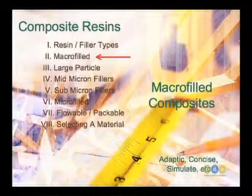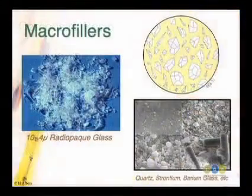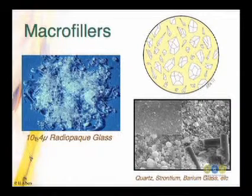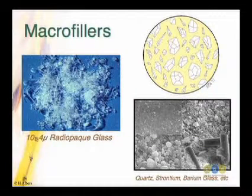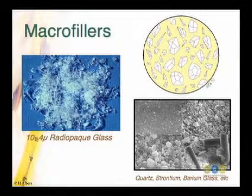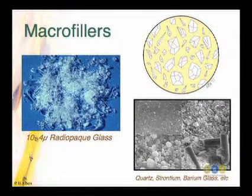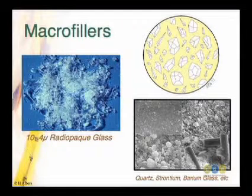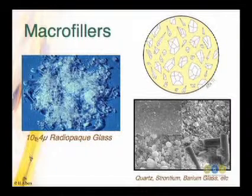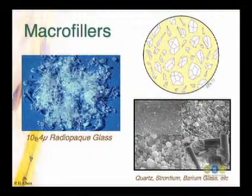The first type of composite we can talk about is the macro-filled composite, which just means big filler. If you took a piece of glass — lead glass perhaps, like that used in fine china — and broke it down into little pieces and ground it up really small, and put that into some acrylic, you'd have basically a crude version of a modern-day composite. Composites are essentially pieces of glass placed at a very high loading rate into a liquid plastic — glass-impregnated plastic is what we're dealing with. The size of those little pieces of glass determines how the composite performs and what you can expect out of it.